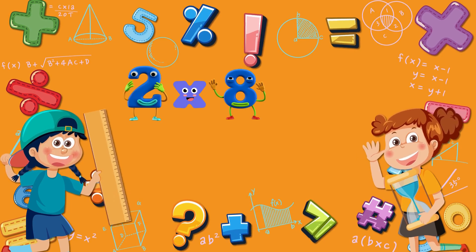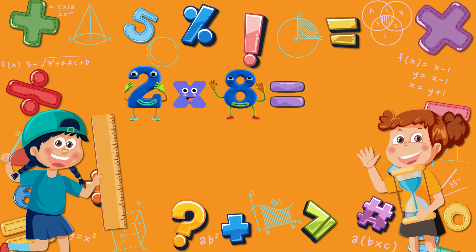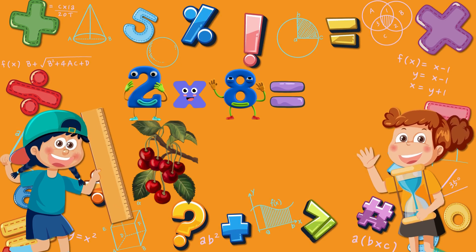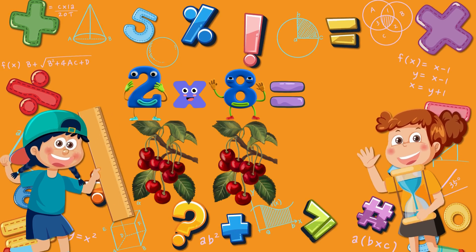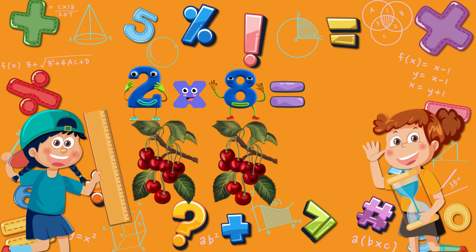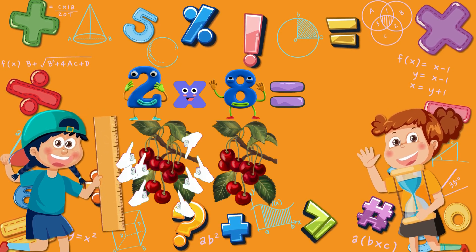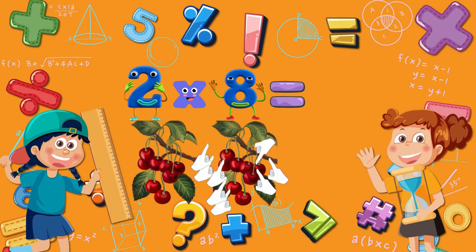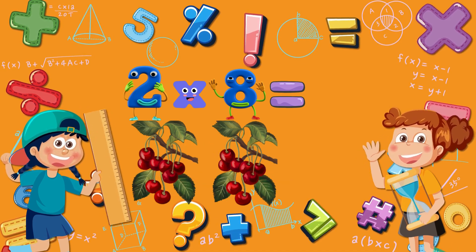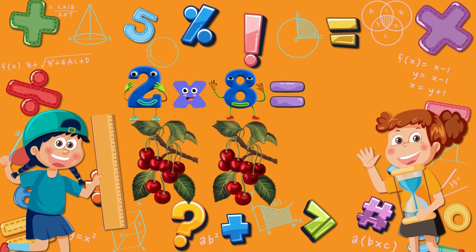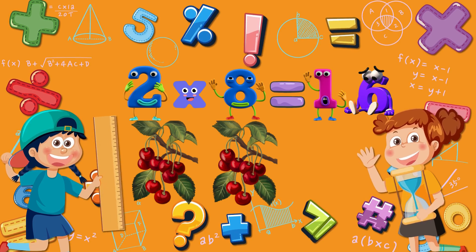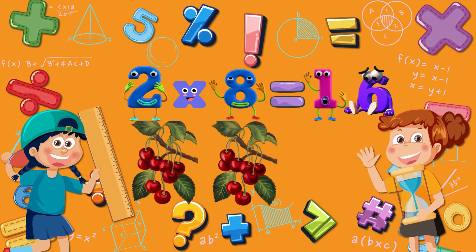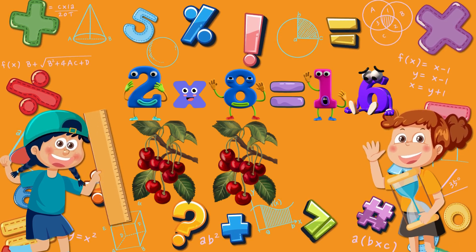Two times eight is equal to? Two branches, each with eight cherries. Eight cherries on the first branch, and eight on the second branch. Eight plus eight is equal to sixteen. Two times eight is equal to sixteen.